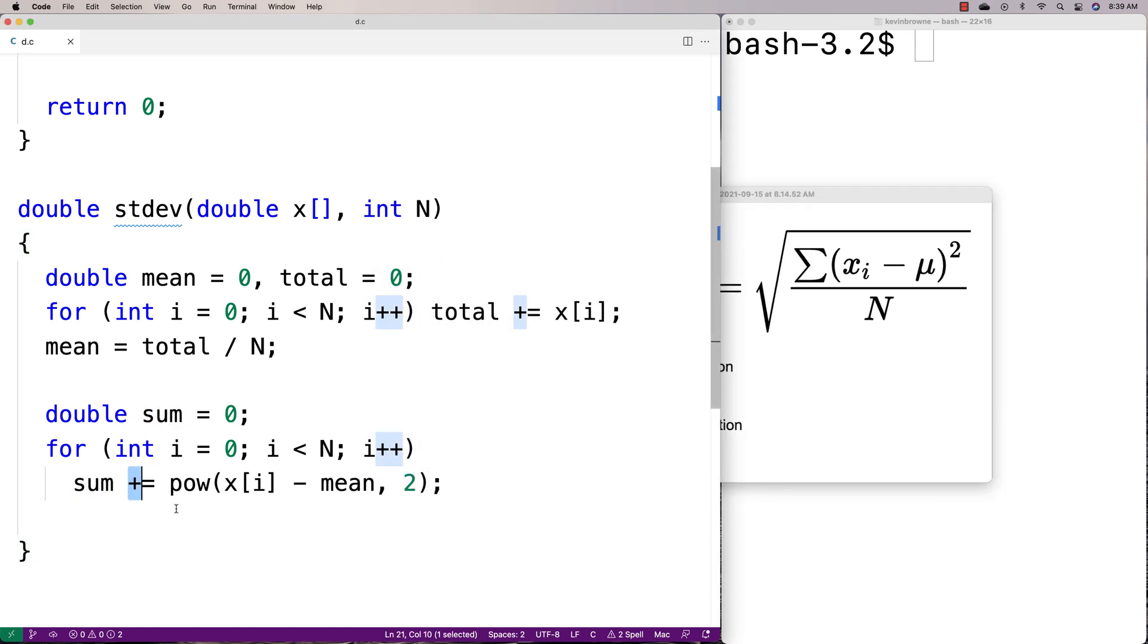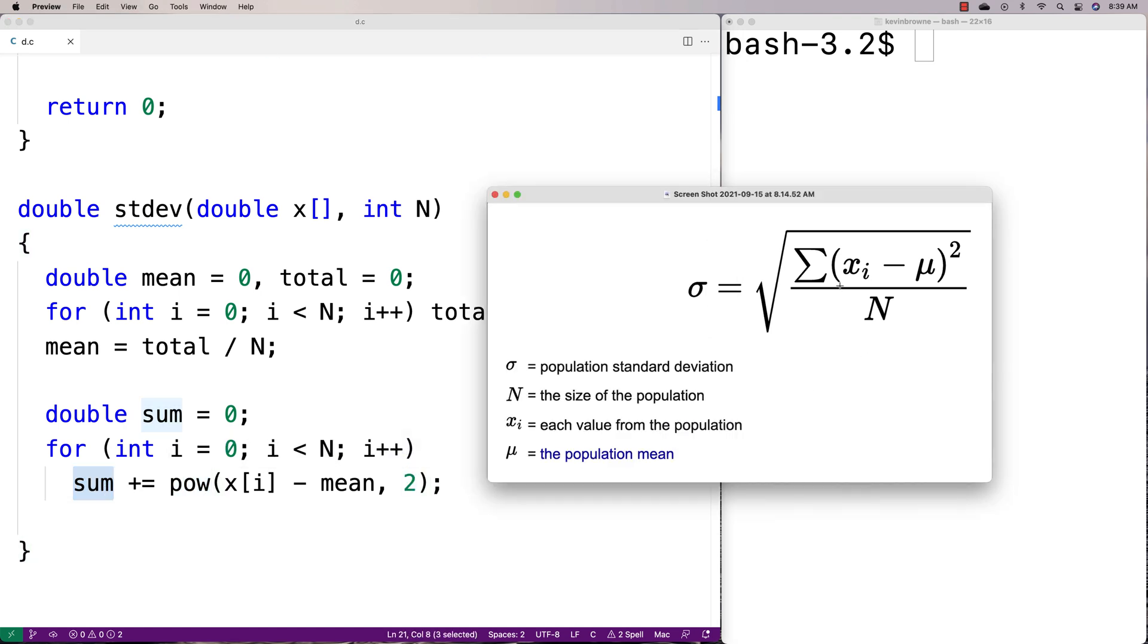This is building the sum one element at a time. We're saying x[i] minus the mean, which is what we have in the formula, then taking that to the power of two and adding it to the sum. That gives us the summation.